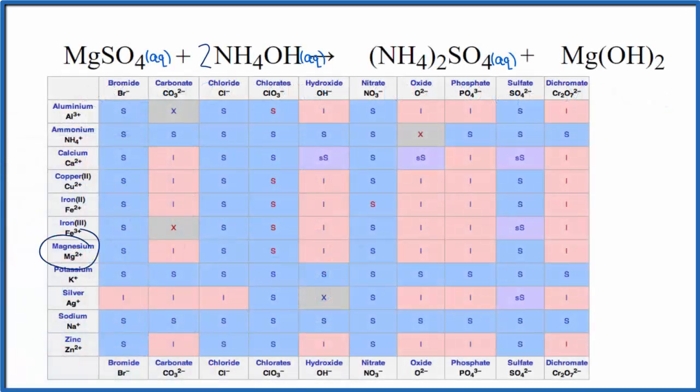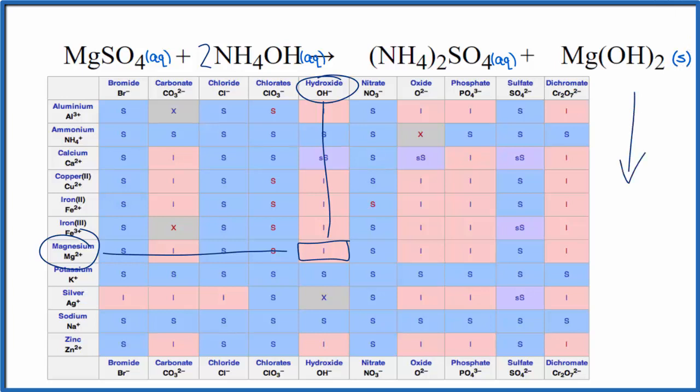So we find magnesium and then hydroxide. We go over and down. That I, that means it's insoluble. So this is going to be a solid. And that means it's going to be a precipitate. It's going to fall to the bottom of the test tube.